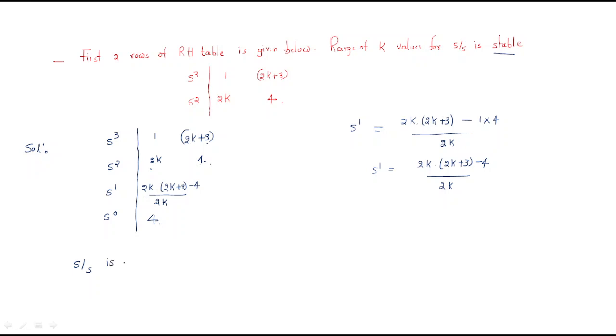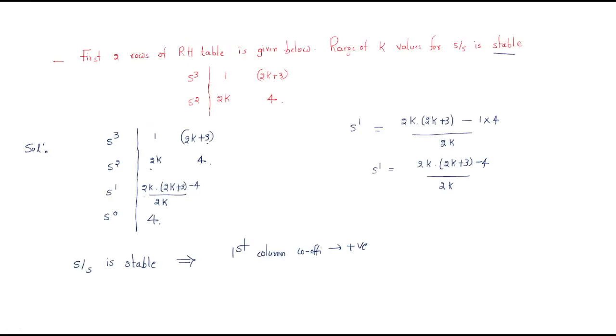For the system to be stable, all first-column coefficients of the RH table must be positive. The value 1 is already positive. We don't know about 2k, so the first condition is 2k > 0, which means k > 0. This is our first condition.